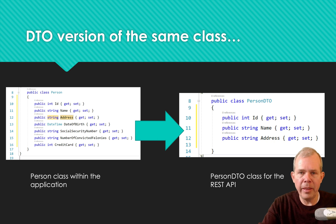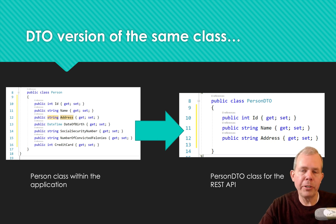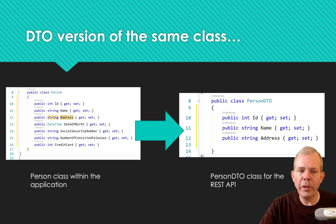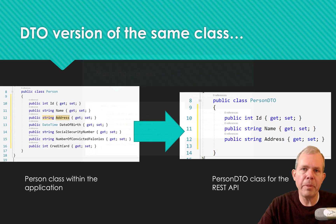In this case, the left side is the original class and the right side is the person DTO class. You can see it's the same data, but only the first three properties have been included. Obviously, on the right side there's less of a security risk if you share this data with other people.